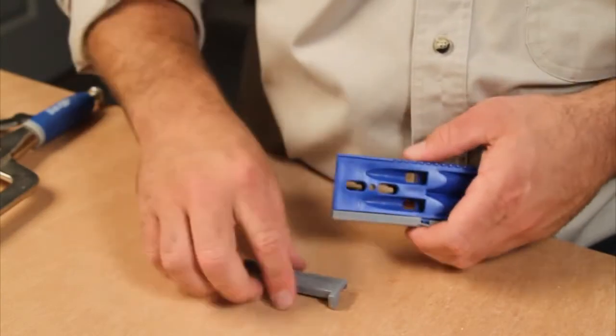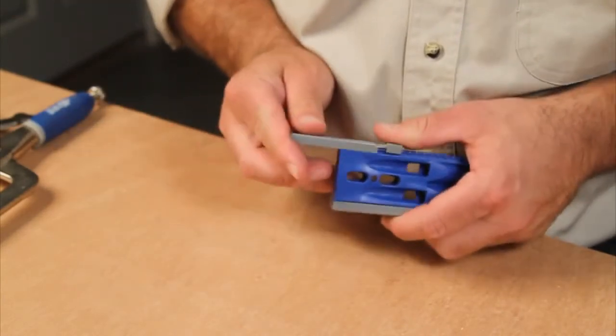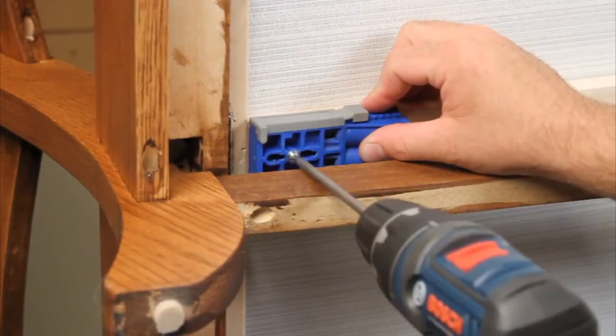For tight repair applications when a clamp cannot be used, simply reverse the positioning sliders and screw the jig into place.